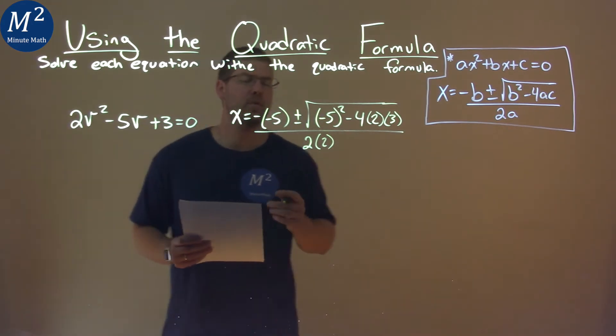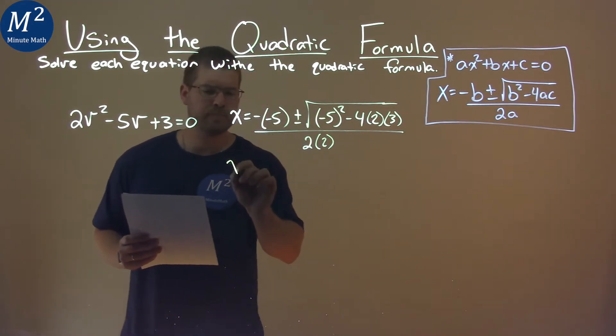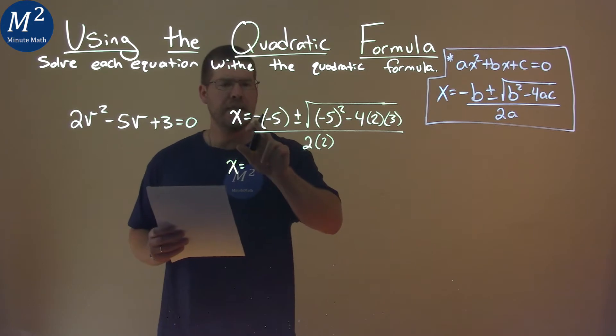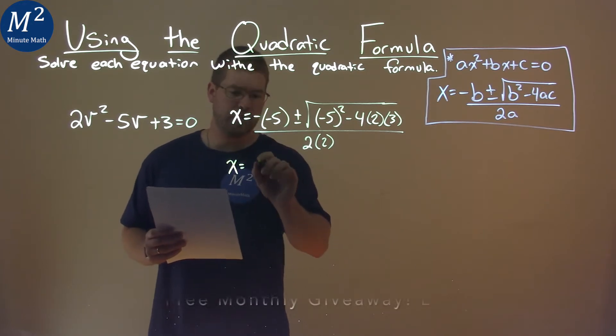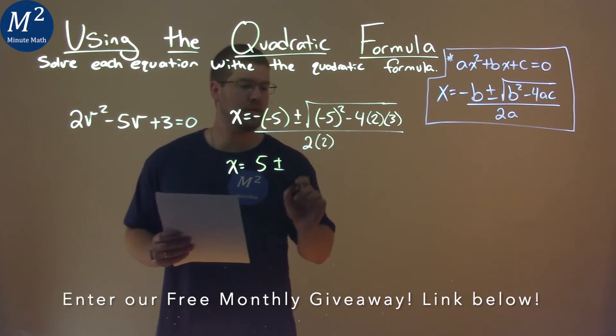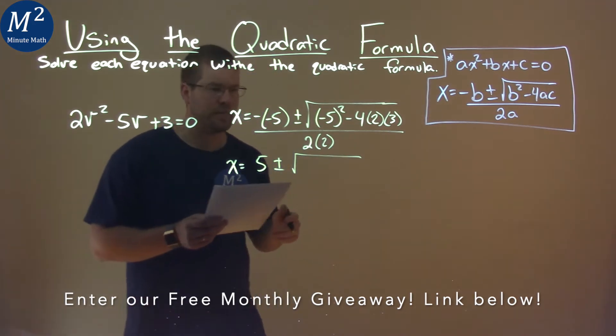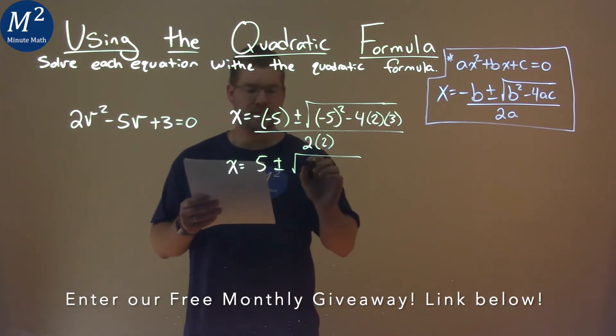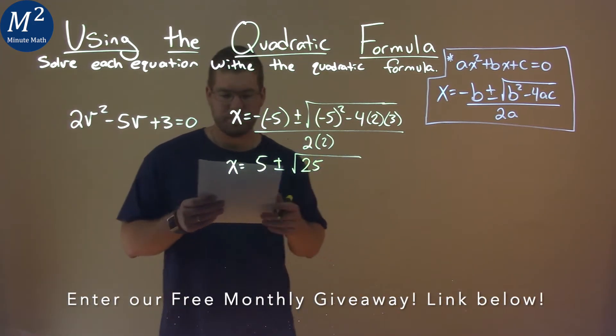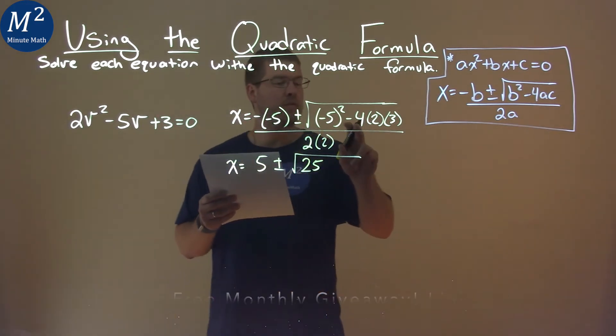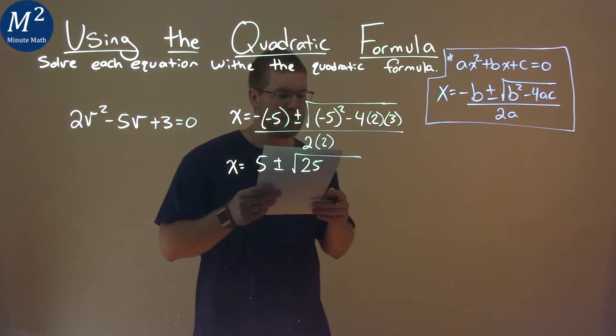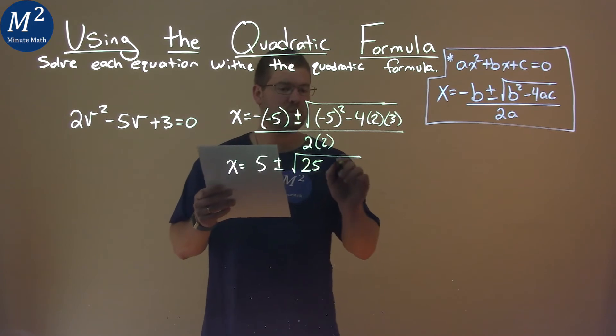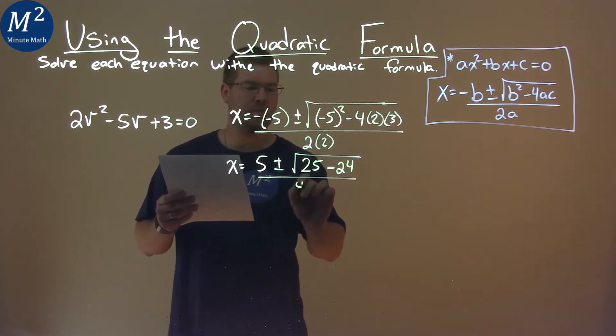And so now we want to solve this. Take it step by step. Negative negative 5 is a positive 5, plus or minus the square root of, well, negative 5 squared is 25. Then from there, 4 times 2 times 3 is 24, and we have minus 24 here, all over 2 times 2, which is 4.